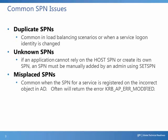The misplaced SPN scenario can happen most often when there is confusion regarding which object in Active Directory should have the SPN entered on — whether it should be the service account's user object or the computer object on which the service is running. SPNs in the wrong account would cause the service ticket to be encrypted with the wrong password, and Kerberos authentication in that case would fail. In network traces and events, this would be indicated with an error similar to KRB_AP_ERR_MODIFIED.